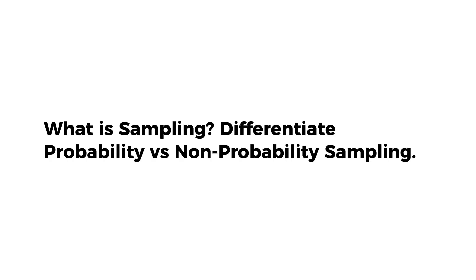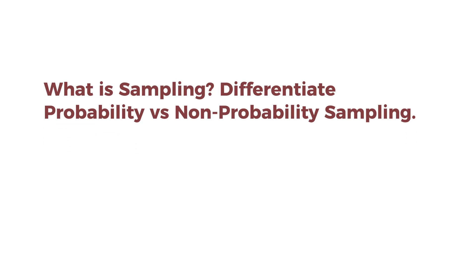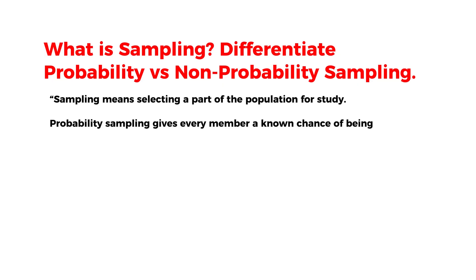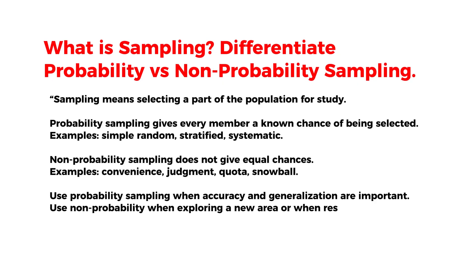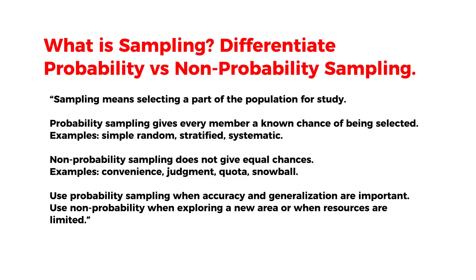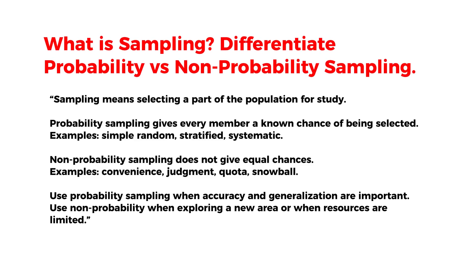Question 4: What is sampling? Differentiate probability versus non-probability sampling. Sampling means selecting a part of the population for study. Probability sampling gives every member a known chance of being selected. Examples include simple random, stratified, and systematic sampling.